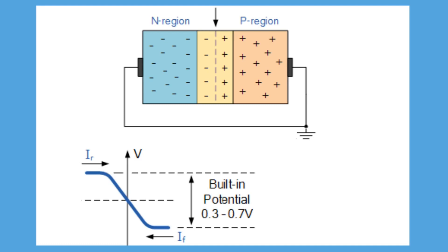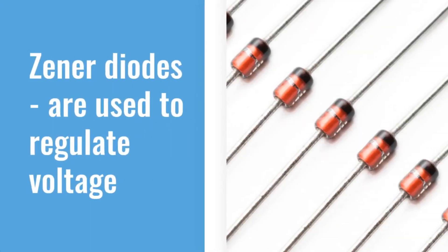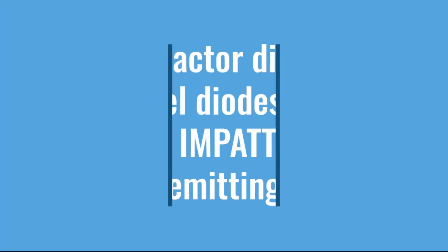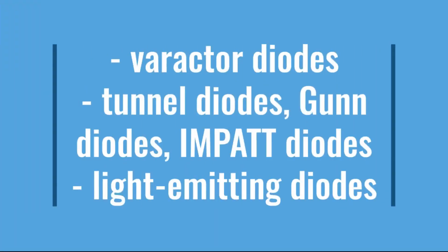Diodes are used for various functions. For example, Zener diodes are used to regulate voltage. Avalanche diodes are used to protect circuits from high voltage surges. Varactor diodes are used to electronically tune radio and TV receivers. Tunnel diodes, Gunn diodes, and IMPATT diodes are used to generate radio frequency oscillations, and light emitting diodes are used to produce light.